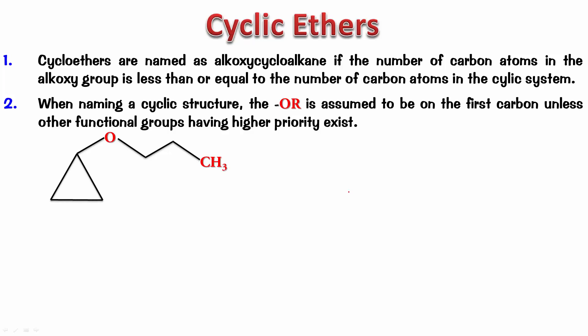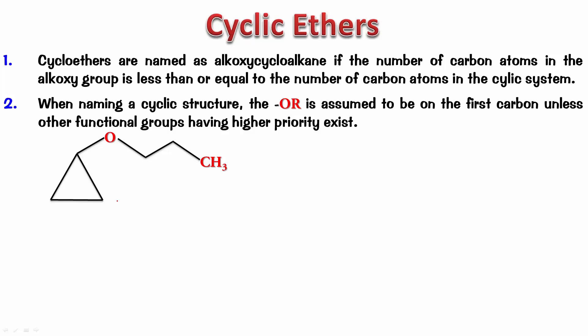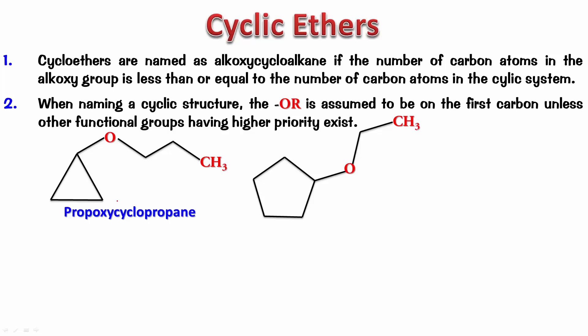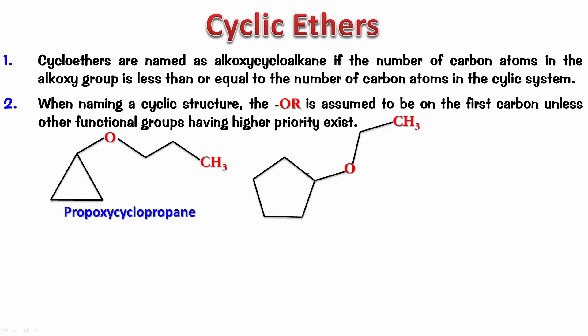For example, take a molecule where you have three carbon atoms in R and three carbon atoms in the cyclo part. Since both have the same number of carbons, the cycloalkane is taken as the parent — this is going to be propoxycyclopropane. Another example: a two-carbon alkoxy part with a five-carbon cyclo part — this is easier, and the name is ethoxycyclopentane.